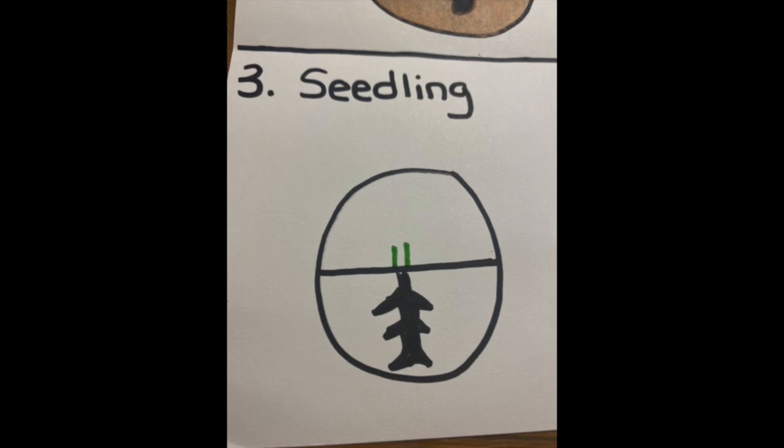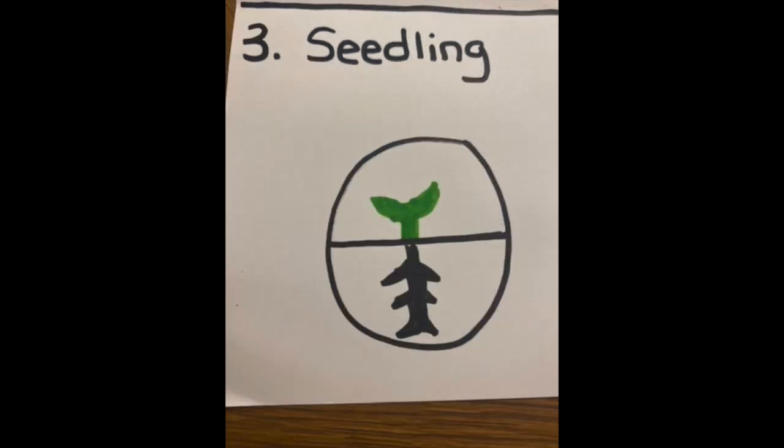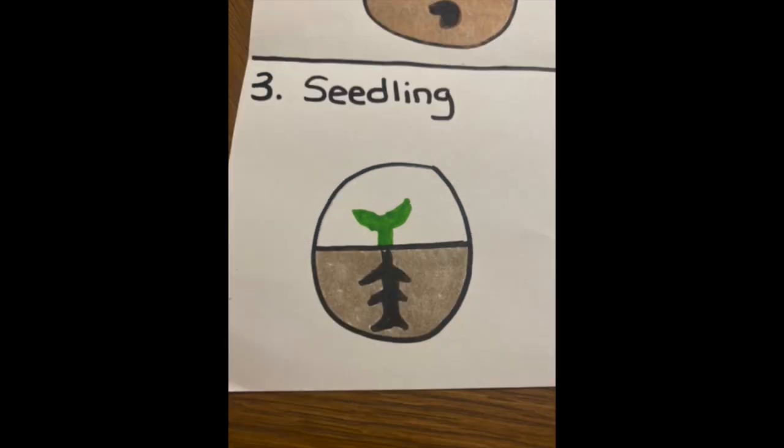Get your green again. Draw those two lines curvy. Now you can draw two leaves at the top, just like this. Try your best. Now you can color in your leaf and your stem, colored in green. Now you can color in the dirt. Get your brown again, color the bottom half brown.